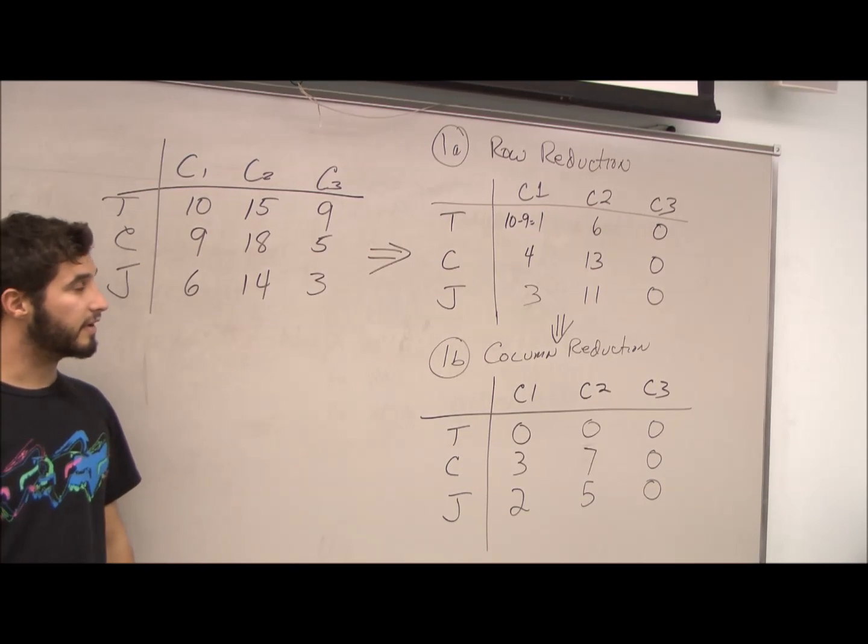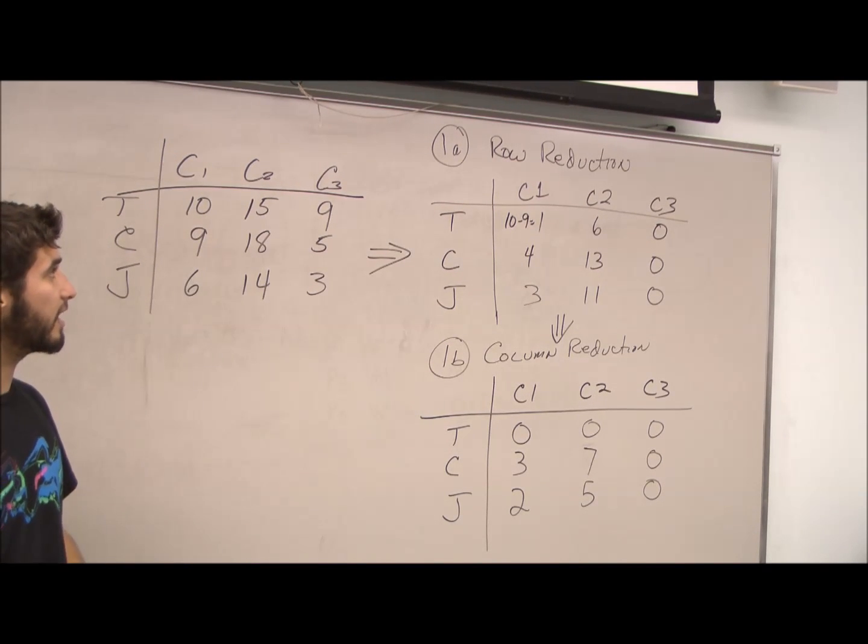So moving on, to develop our opportunity costs, we first have to find row reduction.